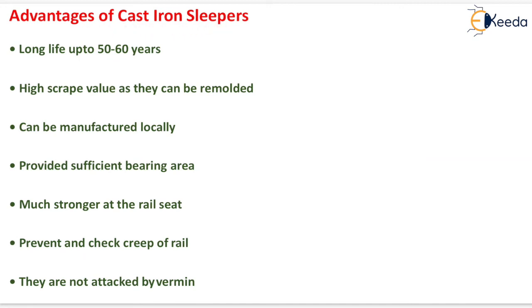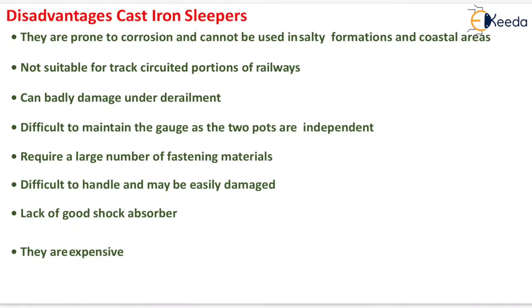Advantages of cast iron sleepers: longer life up to 50–60 years, high scrap value as they can be remolded, can be manufactured locally, provide sufficient bearing area, are much stronger at the rail seat, prevent and check creep of rail, and are not attacked by vermin. Disadvantages: prone to corrosion and cannot be used in salty or coastal formations, not suitable for track-circuited portions, can be badly damaged under derailment, difficult to maintain gauge as the two parts are independent, require large number of fastening materials, difficult to handle, lack good shock absorption, and are expensive.